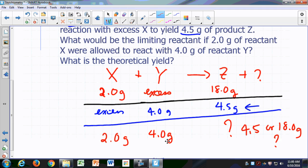By the time you get your 4.5 grams, all of this 2.0 grams of X would have been gone, right? I'm sorry, I made a mistake. By the time you make your 4.5, all of this 4 grams of Y will be gone.